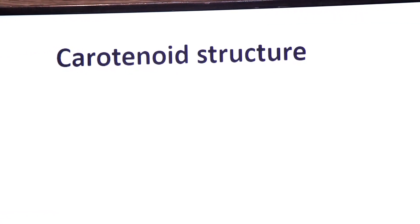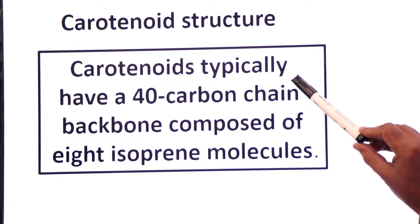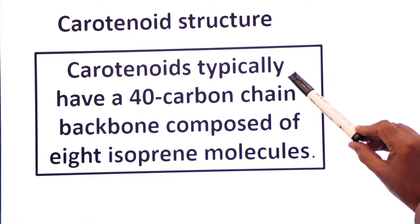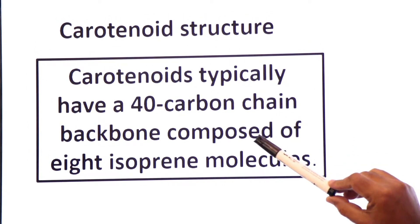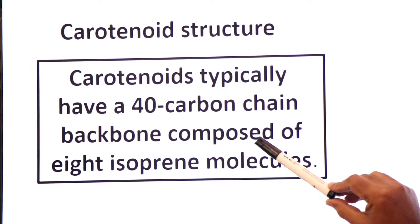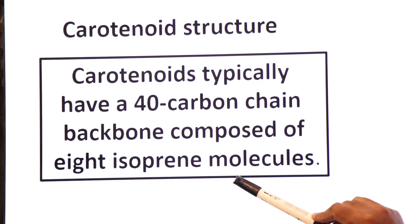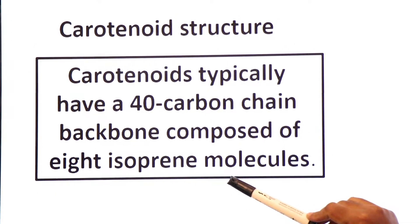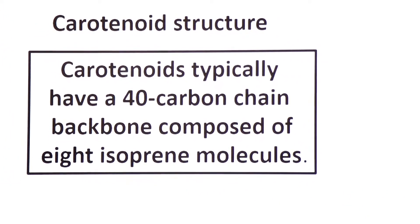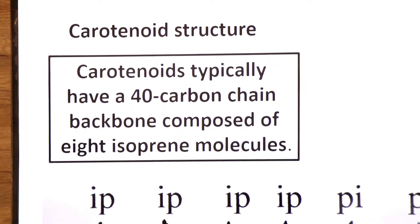Let's discuss the carotenoid structure. Carotenoids typically have a 40-carbon chain backbone composed of 8 isoprene molecules — that is, 40 carbons and 8 isoprenoid units, each with formula C5H8, which we have discussed before.